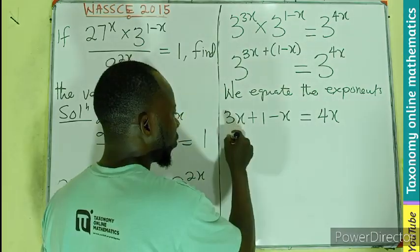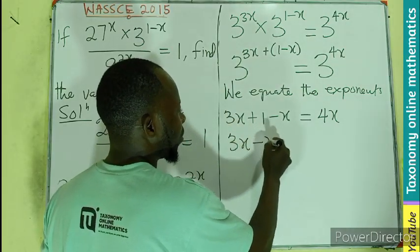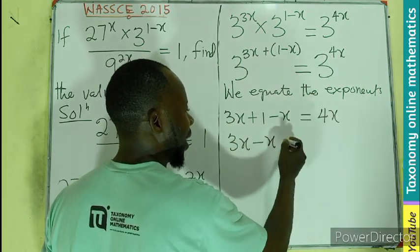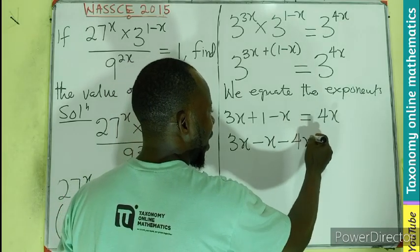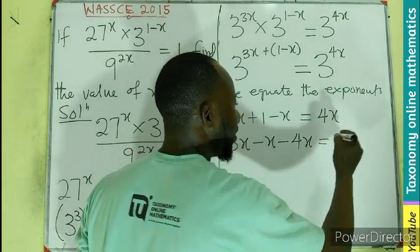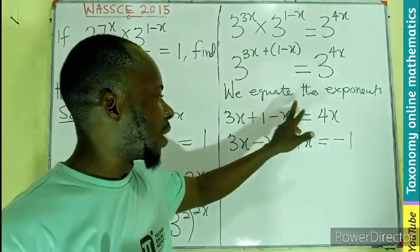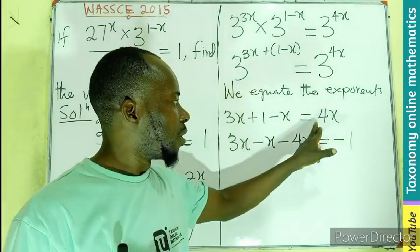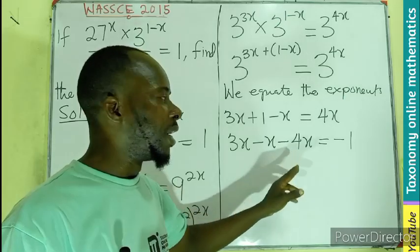We can see that 2x will be here because this is 3x minus x. Or we can group like terms to have 3x minus x. This is coming here to become minus 4x equals negative 1.